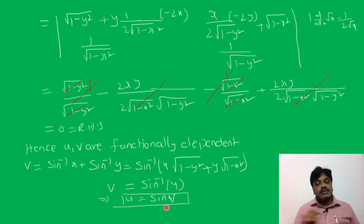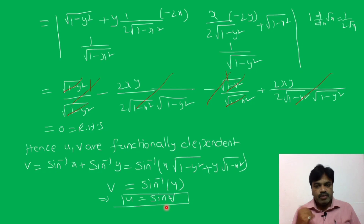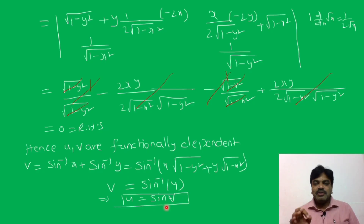This is about functional dependence — when functions are called functionally dependent — using the Jacobian and worked problems on functional dependence. If you have any doubt in the concept or problem, please comment in the comment box. Hope you understand. Thank you for watching this video.